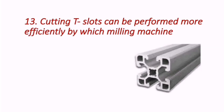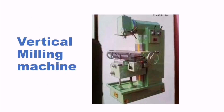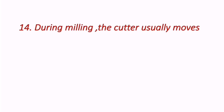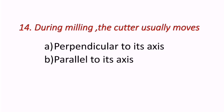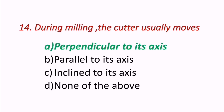Thirteenth question: Cutting T slots — which milling machine performs this most efficiently? The correct answer is B — vertical milling machine is used to produce T slots effectively. Fourteenth question: During milling, the cutter usually moves in which direction? The correct answer is A — perpendicular to its axis.